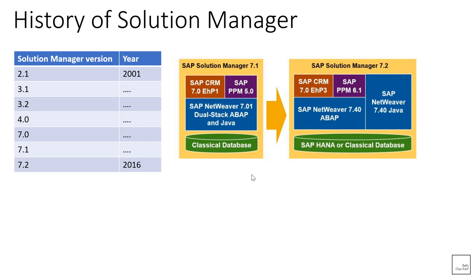Getting back to the topic — once upon a time, Solution Manager was so famous that it was the second most installed SAP product in the world after SAP ECC. But at the same time, the utilization rate of the product has always been less than what SAP had hoped for. Utilization rate means the number of functionalities in Solution Manager that are actually used by customers, because just installing the software is different from using it to its full potential. It's like buying a Ferrari car but just using it to get some groceries down the road — while there is nothing wrong with that, a Ferrari is not built for that purpose.